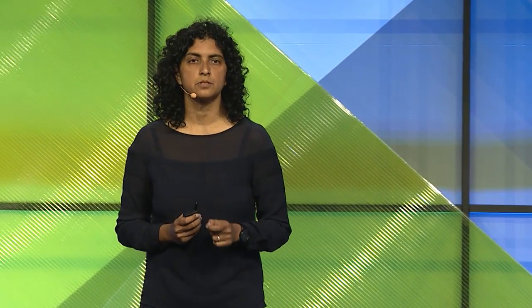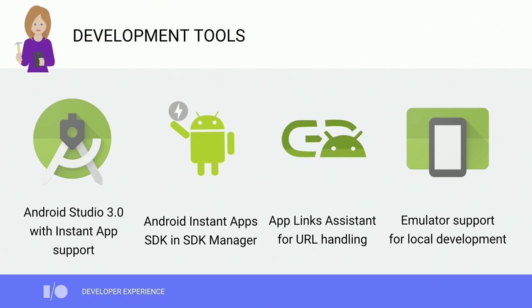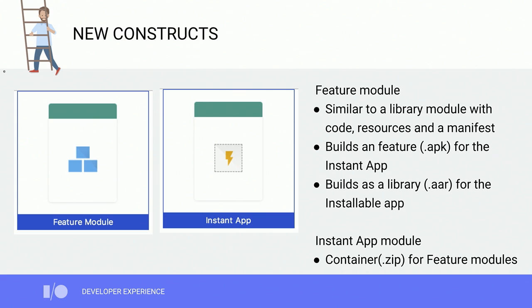Many of you develop apps in Android Studio. Android Studio 3.0 comes with Instant Apps support out of the box. You can install the Instant Apps SDK through SDK Manager, and then build, run, test, and debug Instant Apps directly from the IDE. You can also easily add URL entry points with the App Links Assistant built directly in Android Studio. Apart from on-device support, we've also enabled emulator support for fast and easy local development. We've introduced a new construct called the Feature Module — similar to a library module in that it contains code, resources, and a manifest, but Feature Modules build as APKs for your Instant App. Our Gradle plugin will automatically build them as libraries for your installable app, so you can use the exact same code base.